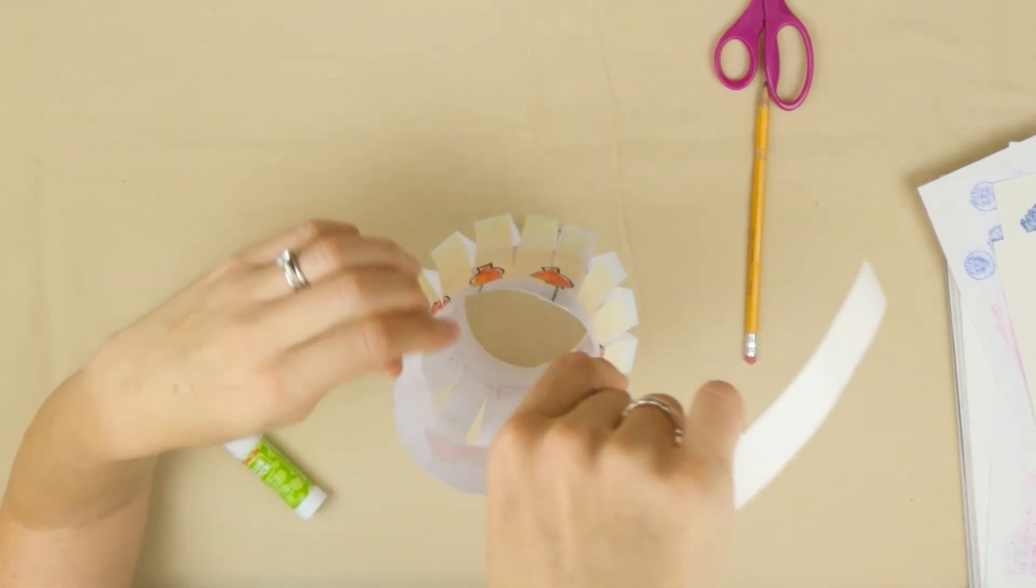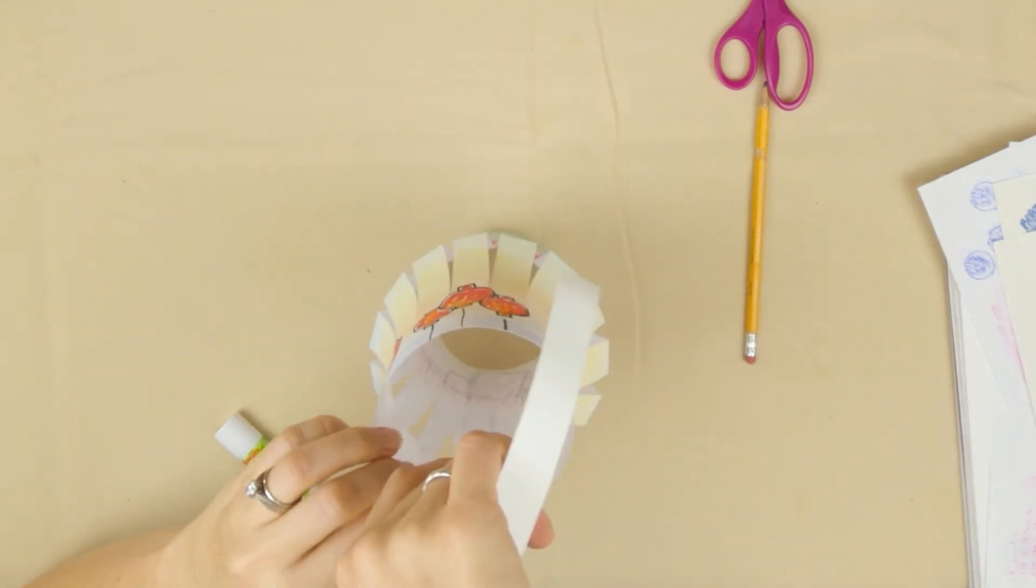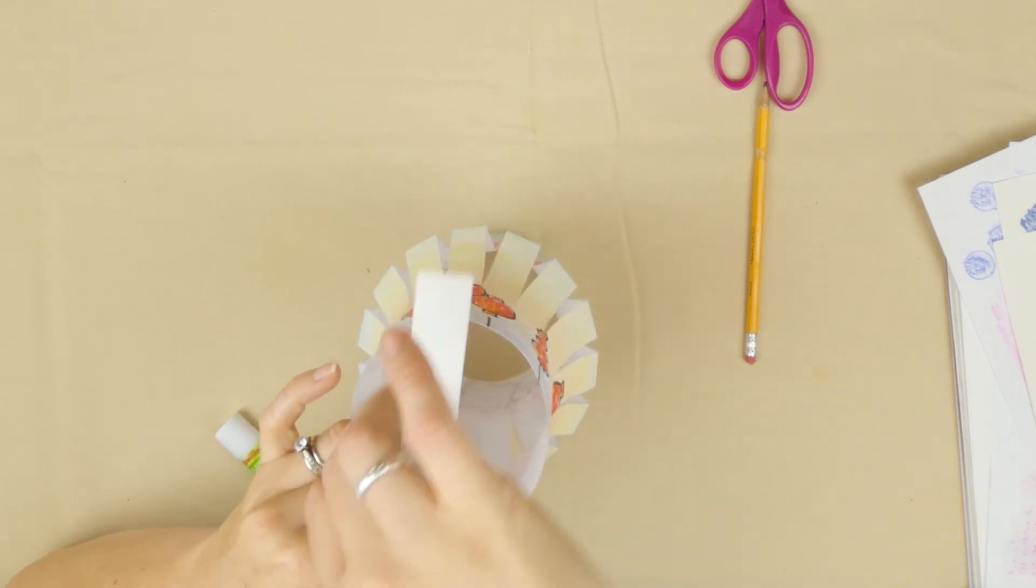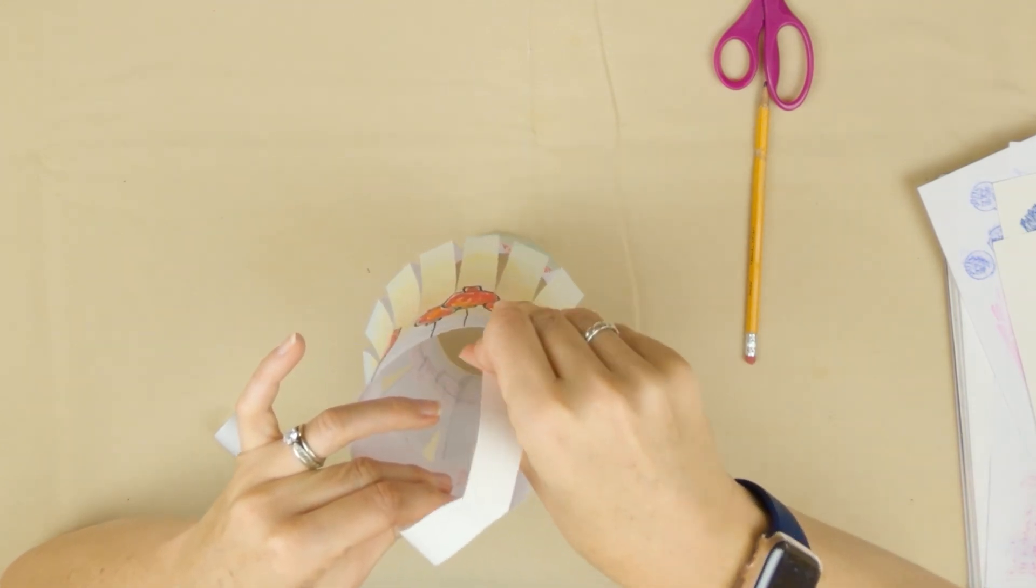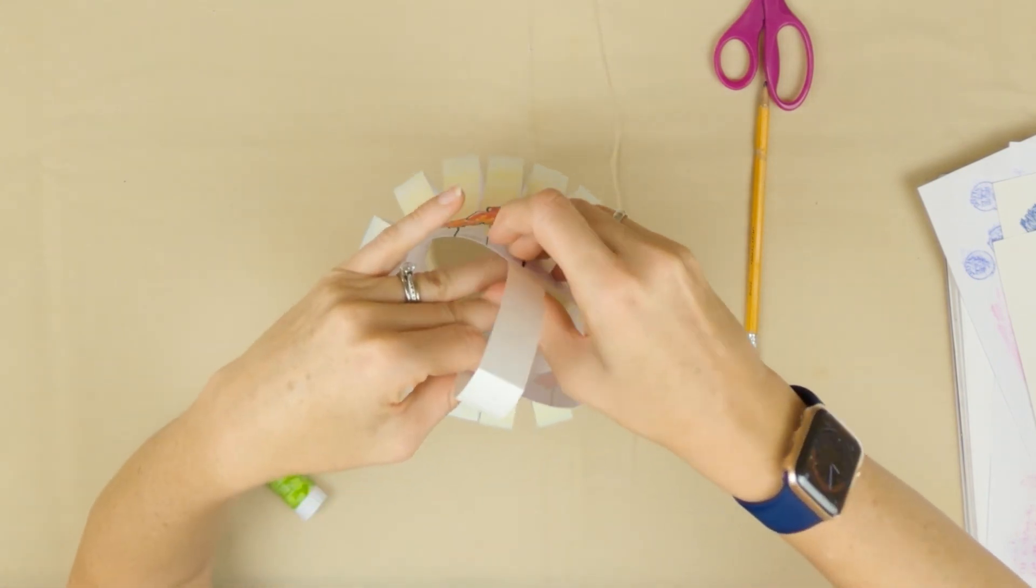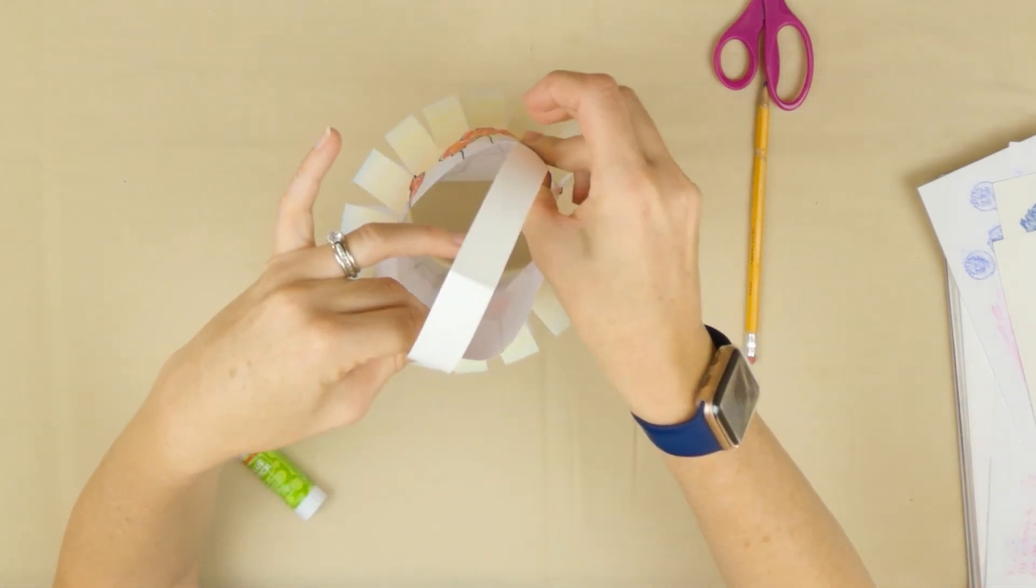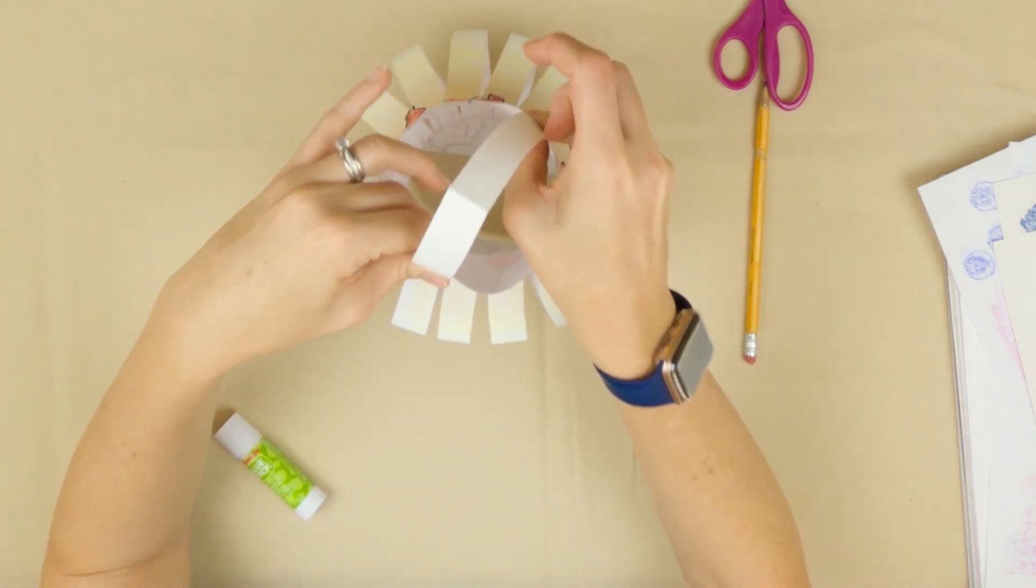I'm going to figure out where I want it. I might put one where it's glued already. Press that, hold it, and press the other side. Hold it for about 10 seconds.